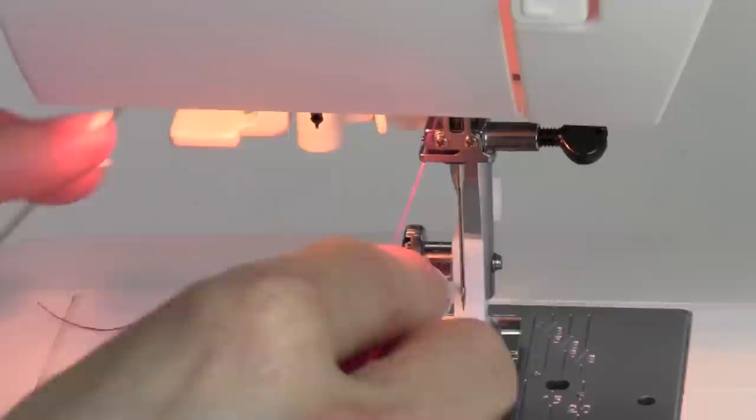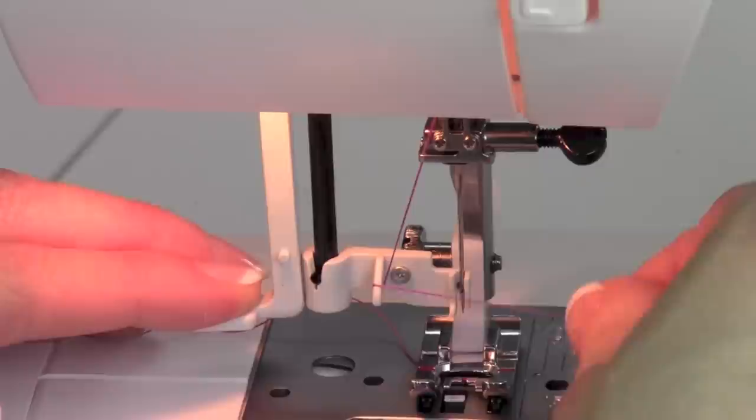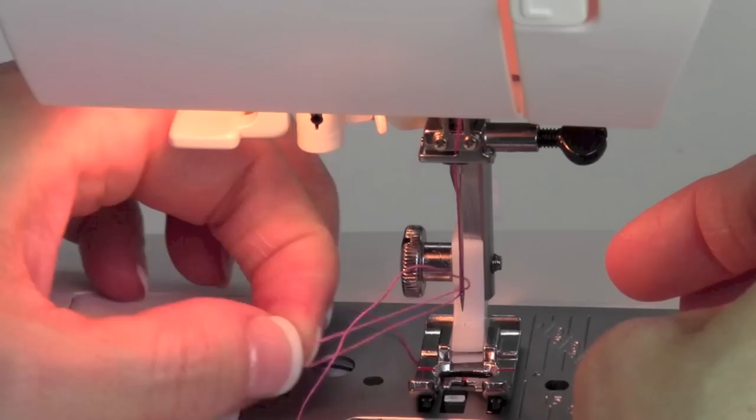You want to see that one more time? So, we're coming down. Step one, catch it under. Step two, bring that all the way down and around the needle. And then up to those arms and then release it. Let it pull it out of your fingers and then all the way out.